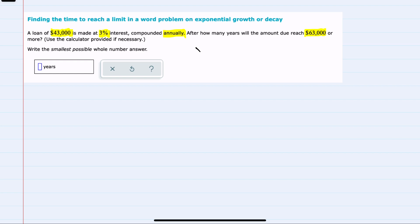And to get a sense of what this looks like, we could look at at the end of year one, we would owe the original $43,000 times 1.03. The 1.03 taking the original amount $43,000 and adding 3%.